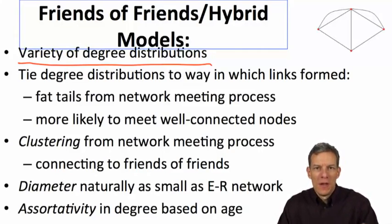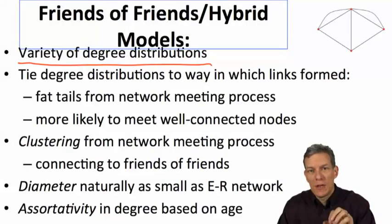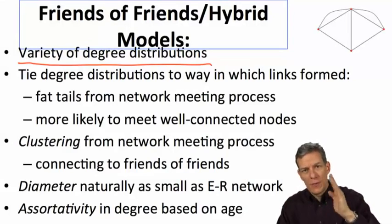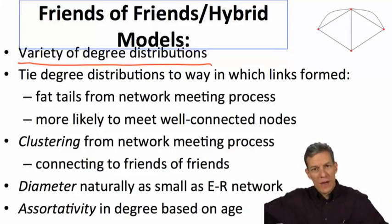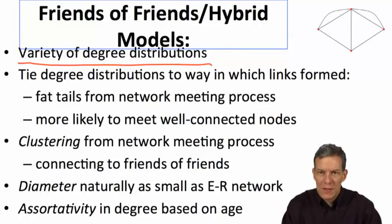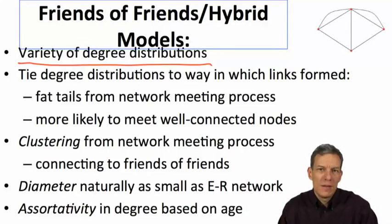To emphasize some other things, things that were missing from the original models, including a straight preferential attachment model, is you still don't get clustering. You're just forming links at random. And the chance that two of my friends were already connected to each other begins to vanish as time becomes large. When you actually do things by this friends of friends model, then what you end up doing is connecting to people in ways that form triangles. Let me give you an illustration of that so you understand. It's an important idea.